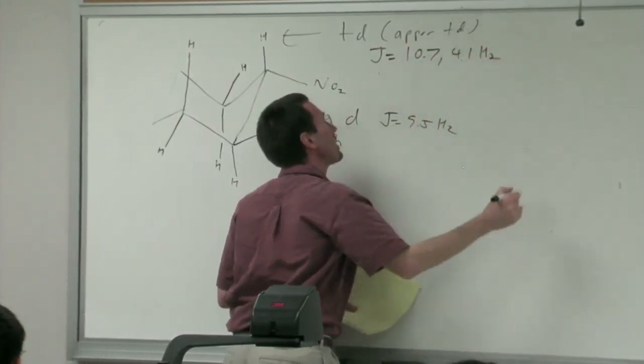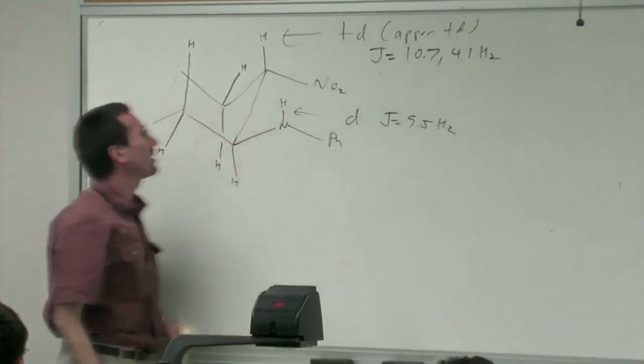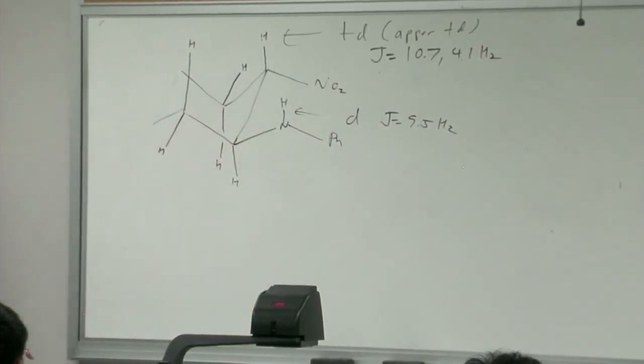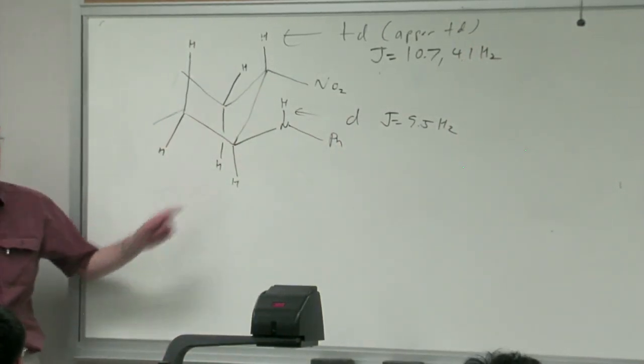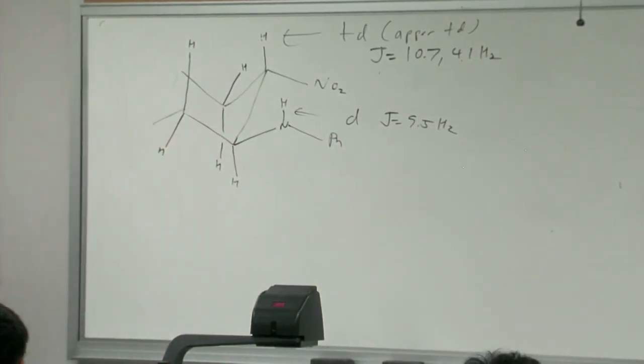If we have the trans diequatorial molecule, the proton alpha to the nitro group has two axial-axial couplings (one to each neighboring axial proton) and one axial-equatorial coupling. So we would expect something akin to a triplet of doublets with a big J of about 10 and a little J of about 3 hertz. What we observe is indeed a TD or apparent TD with J = 10.7 and 4.1 hertz—so far that seems pretty reasonable.